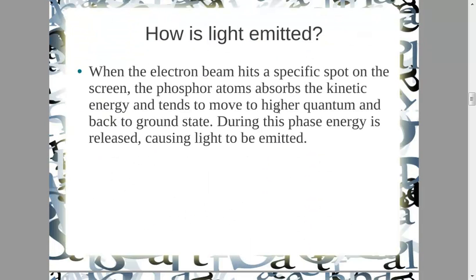During this phase, energy is released, causing light to be emitted. How is light normally emitted? As we discussed in the first section, everything when it comes to color is light that we are seeing, perceived by our cones and rods. When electron beams strike the phosphor-coated layer, they pass a certain amount of kinetic energy to the phosphor atoms, and this kinetic energy moves them to a higher quantum level.